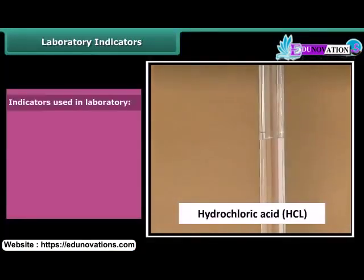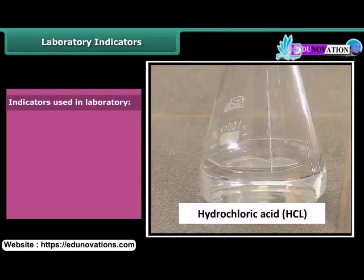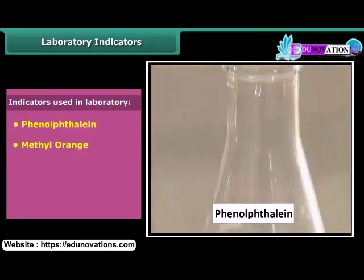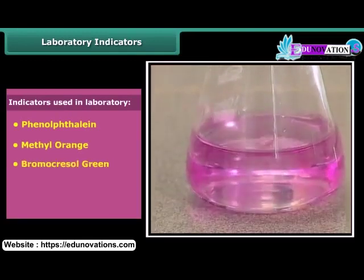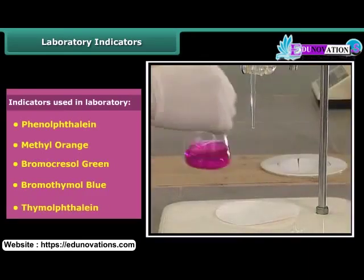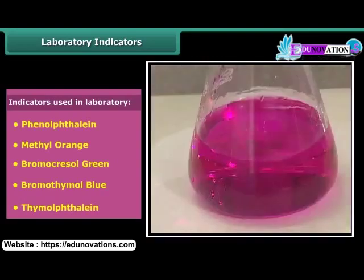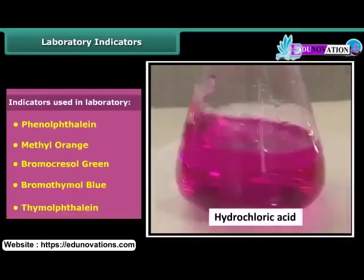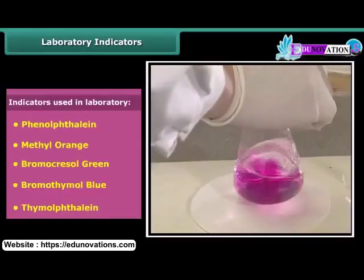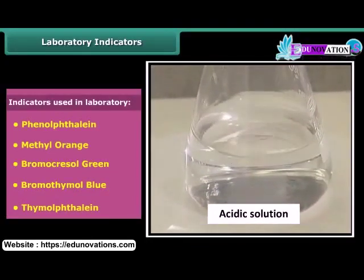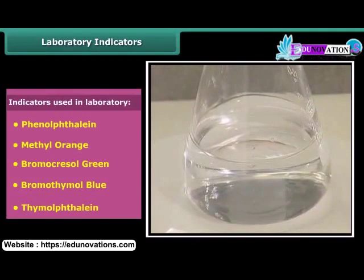Take some hydrochloric acid in a beaker and add some phenolphthalein to it. Now add sodium hydroxide dropwise with continuous stirring. After some time, a pink color slowly appears in the solution. When more sodium hydroxide is added, the pink color becomes brighter. On adding a drop of hydrochloric acid, the solution becomes colorless again. So phenolphthalein appears pink in alkaline solution, colorless in acidic solution, and colorless in neutral medium.